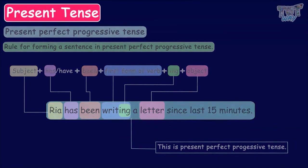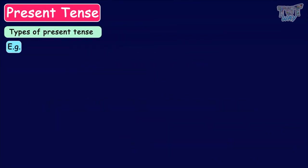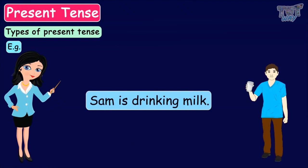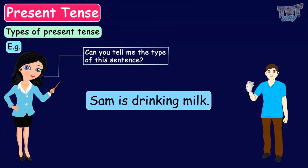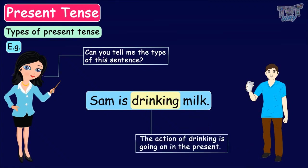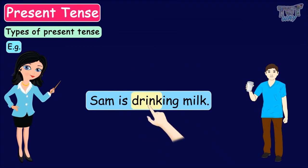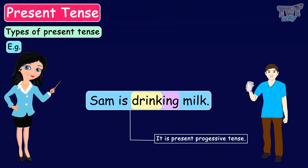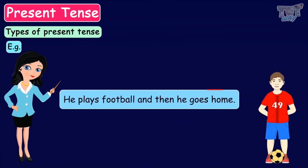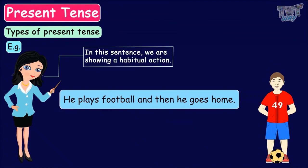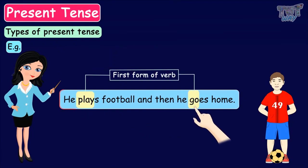Now let us look at some examples and identify the types of present tense. 'Sam is drinking milk.' The action of drinking is going on in the present, the helping verb is is used, and the first form of the verb with ing shows a progressive action — so it is present progressive tense. Next: 'He plays football and then he goes home.' We are showing a habitual action, and the first form of the verb play and go is used along with s or es — so it is simple present tense.